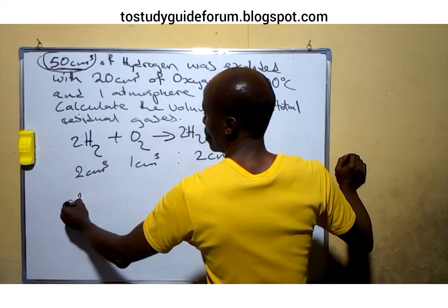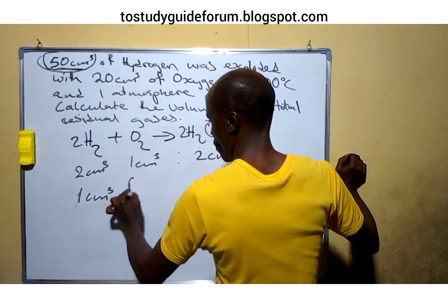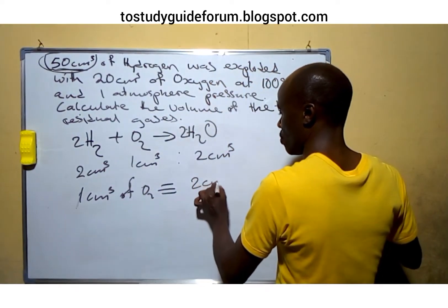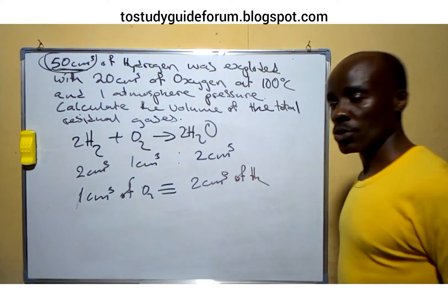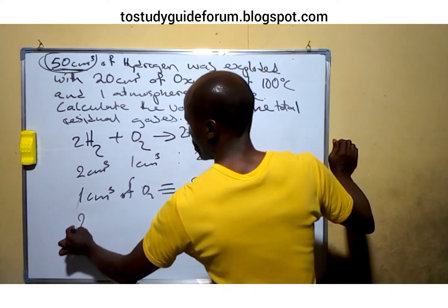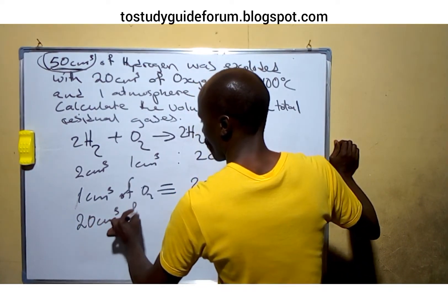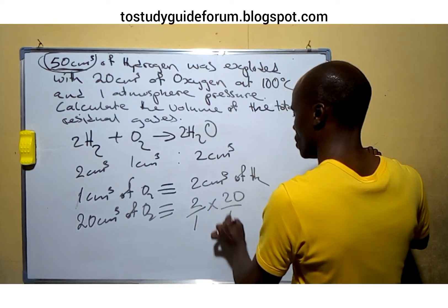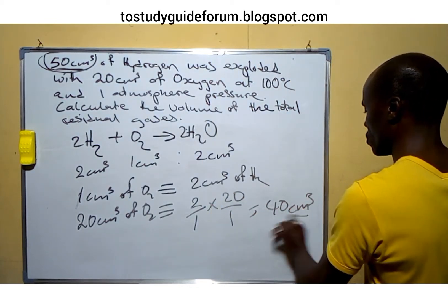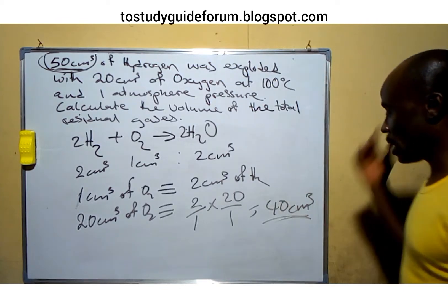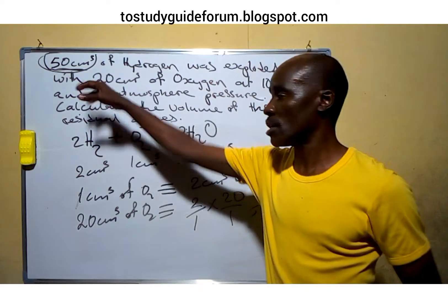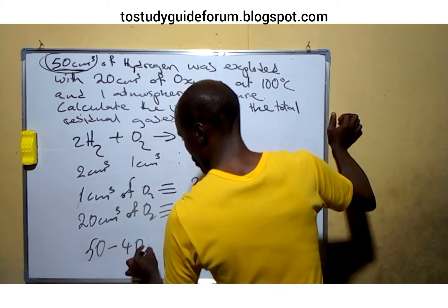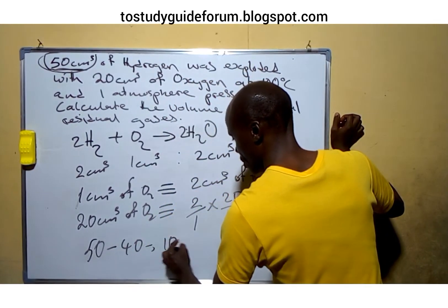Now looking at this, we know that from this reaction, if 1 cm³ of oxygen will combine with 2 cm³ of hydrogen, that means 20 cm³ of oxygen will give us 40 cm³ of hydrogen. What it means is that during this chemical reaction, 40 cm³ of hydrogen will be used up. That means the remaining hydrogen will then be 50 minus 40, we'll have 10 cm³.